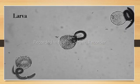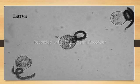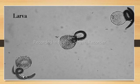The larvae of Ascaris lumbricoides are located inside the fertilized egg. As shown in the diagram, the larvae hatch from eggs and are about 1.2 to 1.8 mm in length.